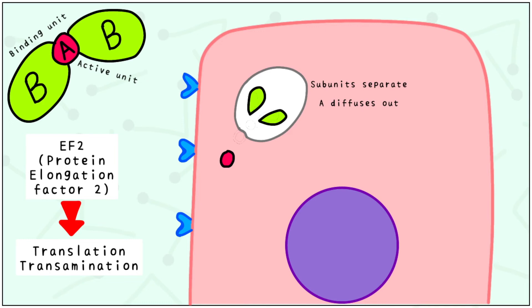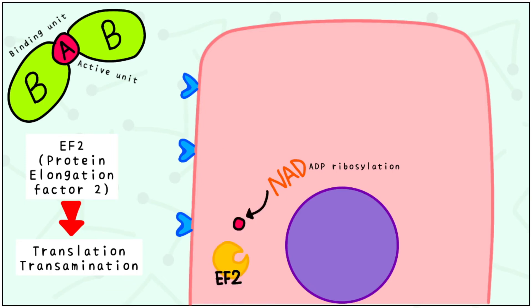This A subunit takes up NAD by the process of ADP ribosylation. With the help of this NAD, the A subunit gains access to the protein elongation factor 2 that we just discussed.